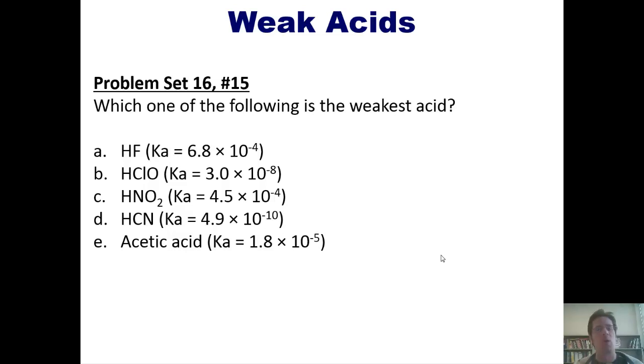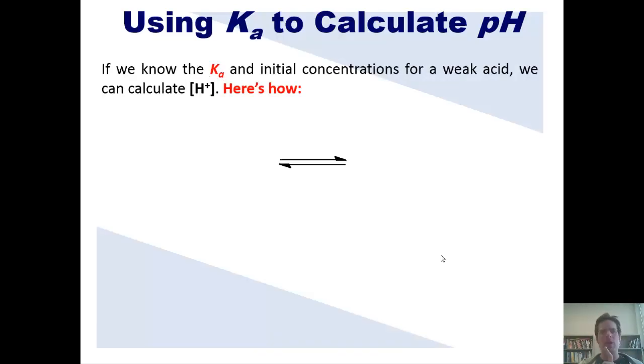In other words, to calculate the pH from a weak acid, we're going to have to use Ka. So if we know the Ka and initial concentrations for weak acids, we can calculate the concentration of H-plus. But it's a little bit more complicated than for a strong acid. Here's how we do that.